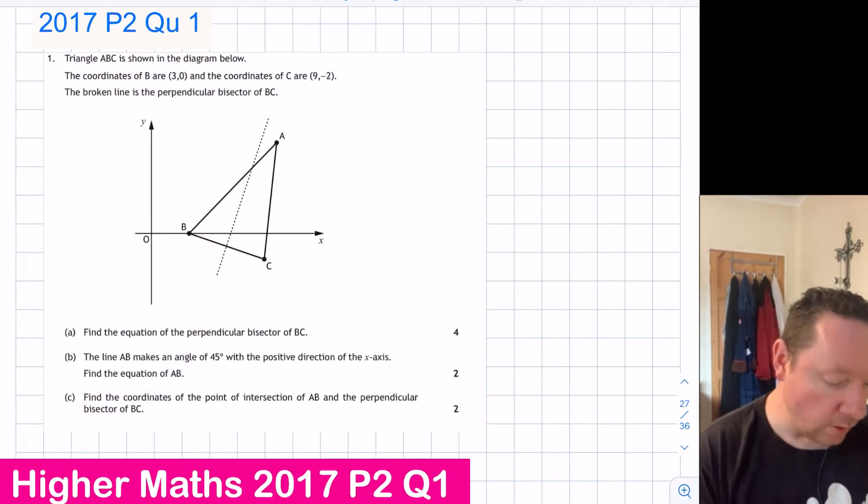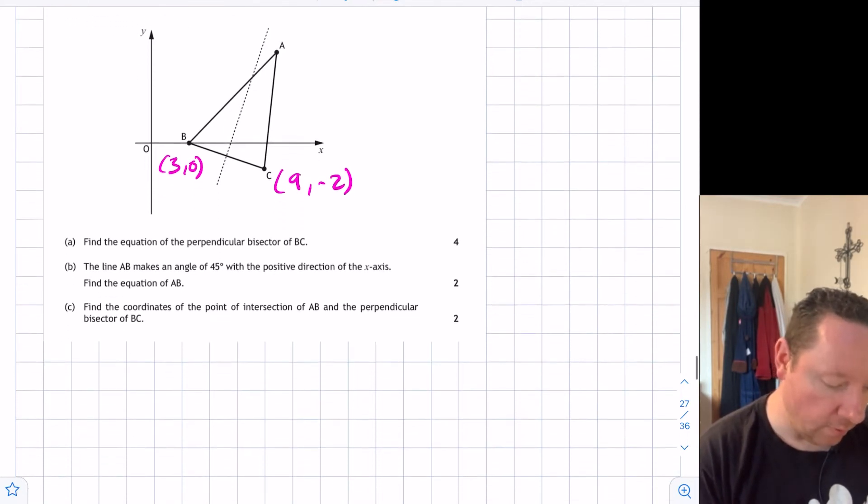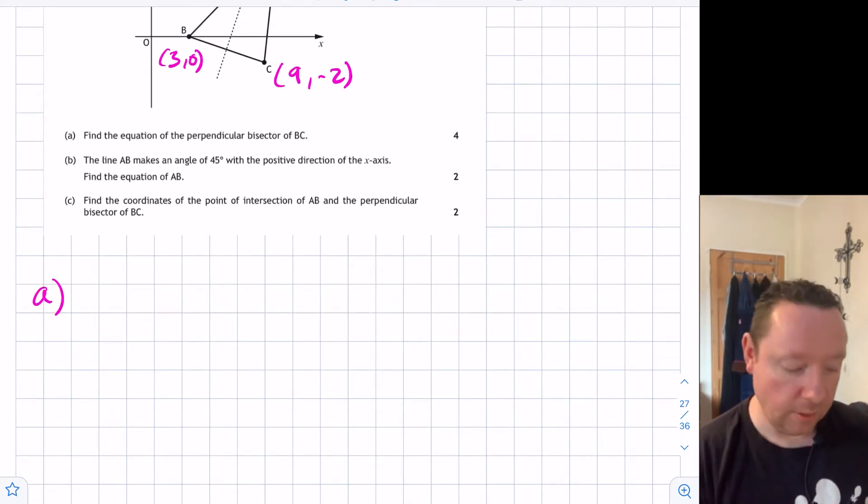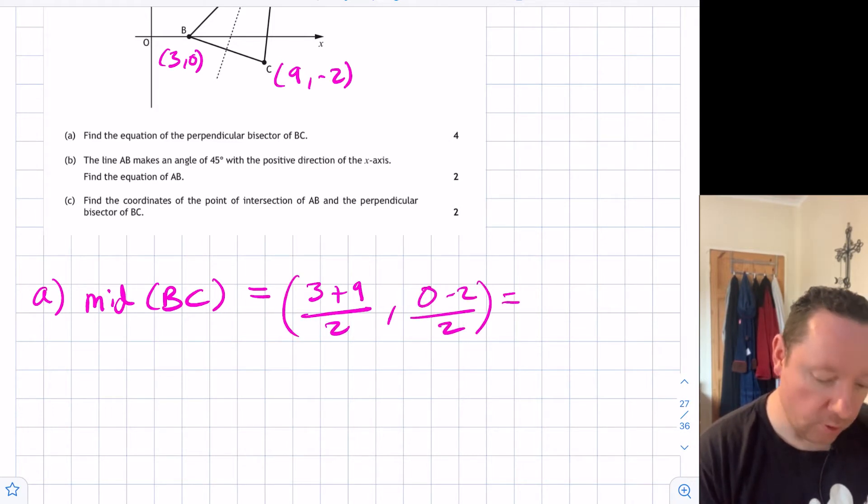2017 paper 2, question 1 says triangle ABC is shown in the diagram. The coordinates of B are (3,0), the coordinates of C are (9,-2), and the broken line is the perpendicular bisector of BC. Part A: find the equation of the perpendicular bisector. For a perpendicular bisector we need the gradient and the midpoint. Let's start with the midpoint of B and C. That's 3 plus 9 divided by 2, and 0 minus 2 divided by 2. 3 plus 9 is 12, divided by 2 is 6. -2 divided by 2 is -1. So we've got our midpoint at (6,-1).